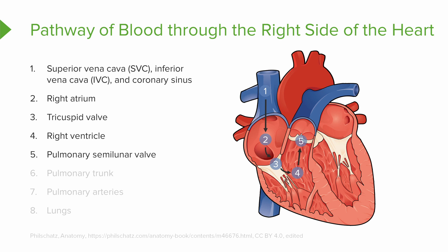Once in the right ventricle, it is now going to be pumped out of that ventricle into pulmonary circulation by way of the pulmonary semilunar valve. Once it travels through this valve, it goes through the pulmonary trunk, to the pulmonary arteries, and eventually this blood is going to go to the lungs where it will be oxygenated at the alveoli.